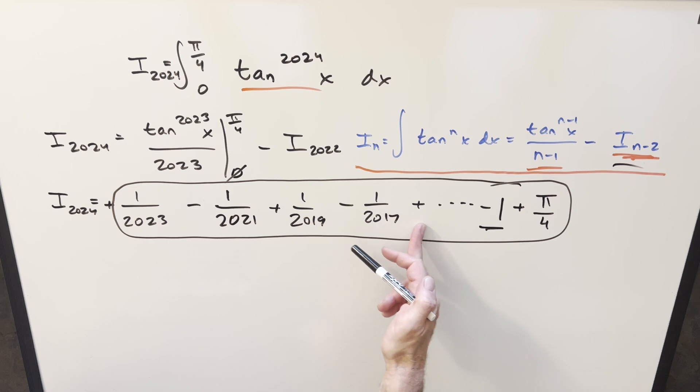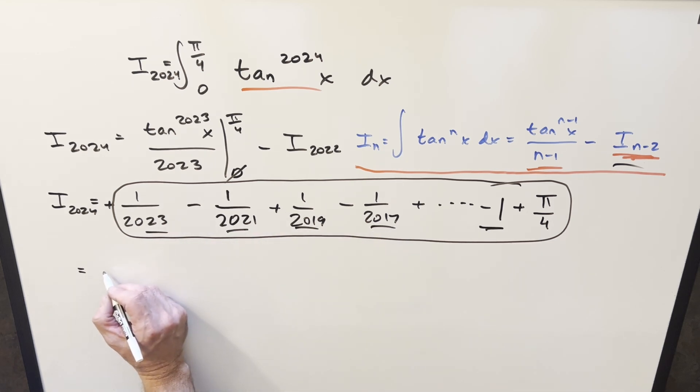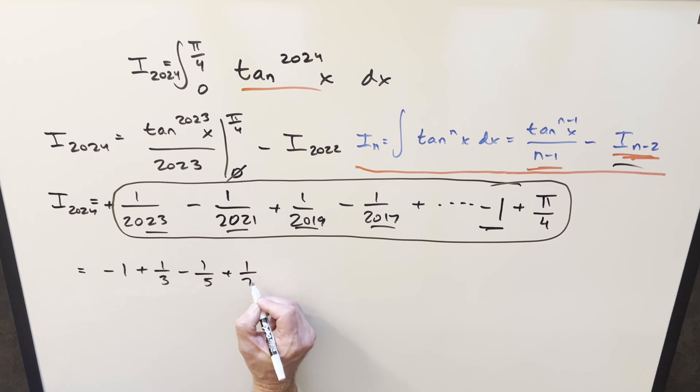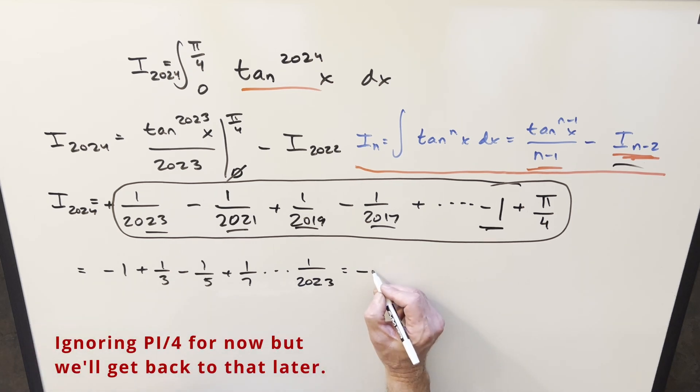Well, what I thought we could do on this is look more closely at this series, but I just want to reverse it because it's kind of harder to deal with the large numbers. We definitely have this nice pattern of just all odd numbers in the denominator. So what we're really looking at is minus 1 plus 1 over 3 minus 1 over 5 plus 1 over 7, going all the way to 1 over 2023. And then I can factor a minus sign out of this.